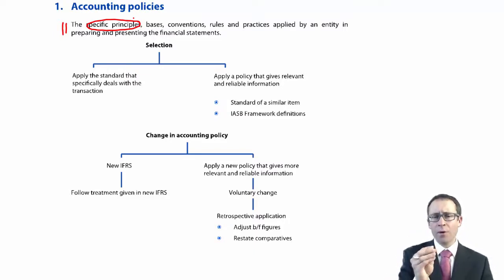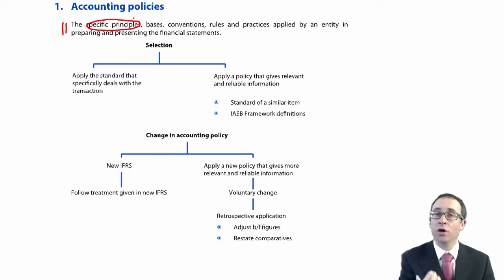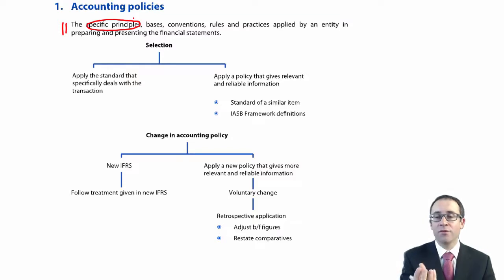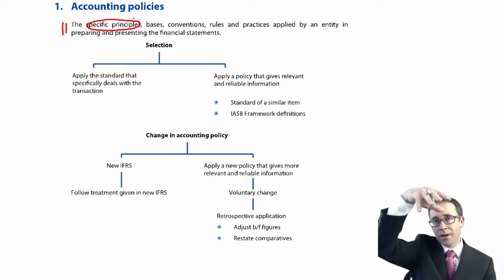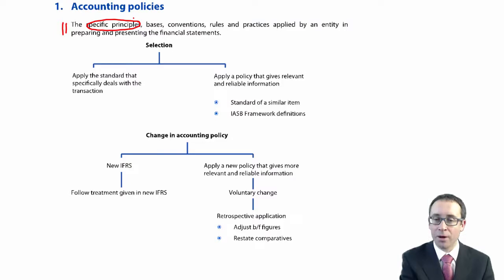When we've looked at IAS 16, it told us the specific measurement basis to measure the asset at cost. It gave a specific measurement basis for how to depreciate the asset, and specifics on how to revalue the asset. So you've got the framework at the top and then all the specific rules within each accounting standard — which is, if you like, the accounting policy.